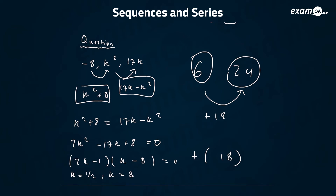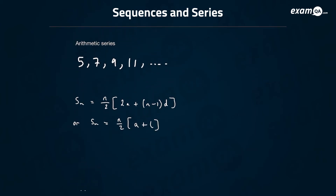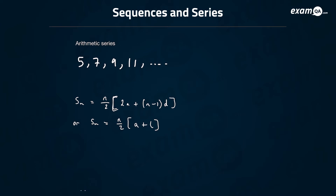That is the general gist of arithmetic sequences. We've also got arithmetic series — basically the same type of sequence, but now we're looking at the series, which means when you add up a certain amount of numbers. The formula for the sum of the first n terms is: Sn equals n over 2 times (2a plus (n minus 1) times d).